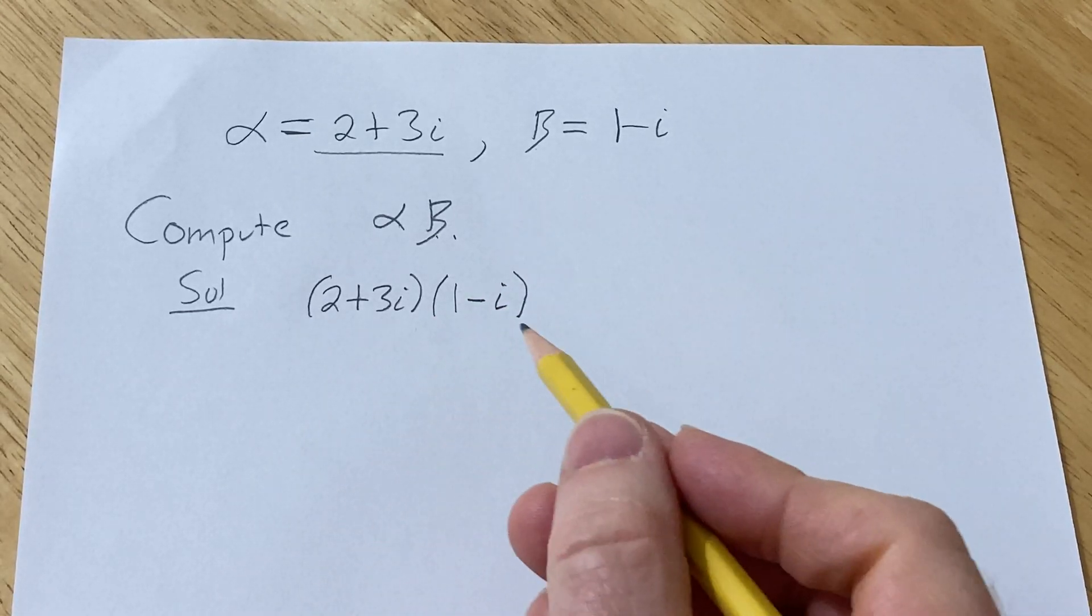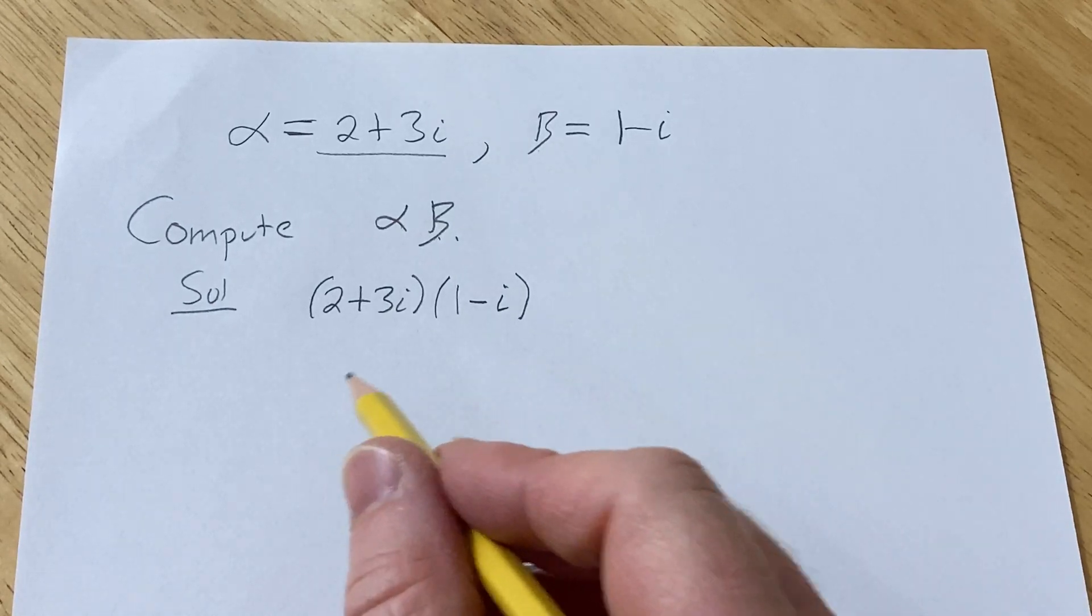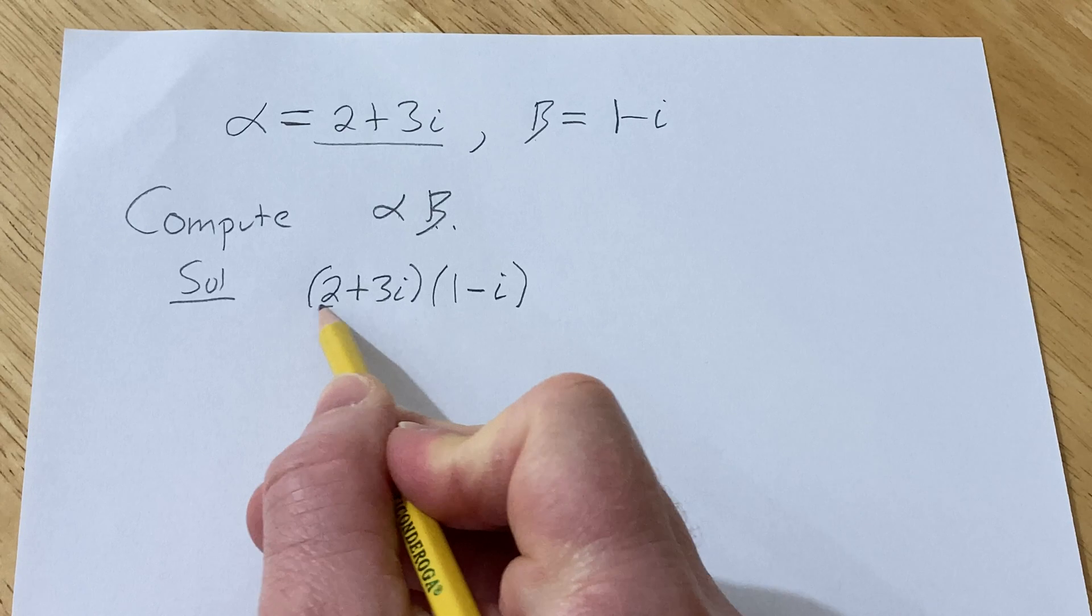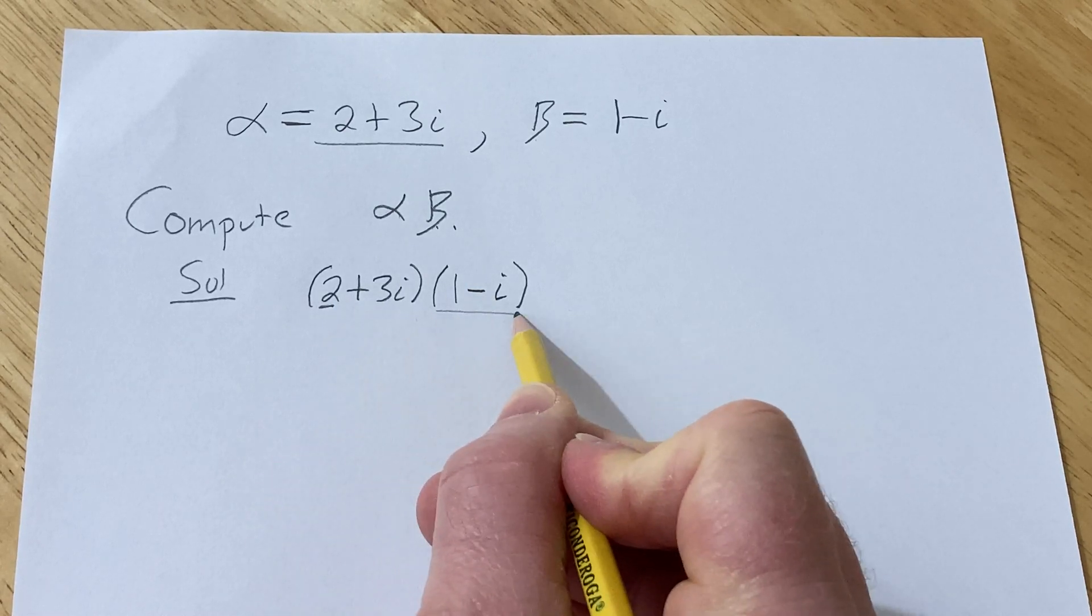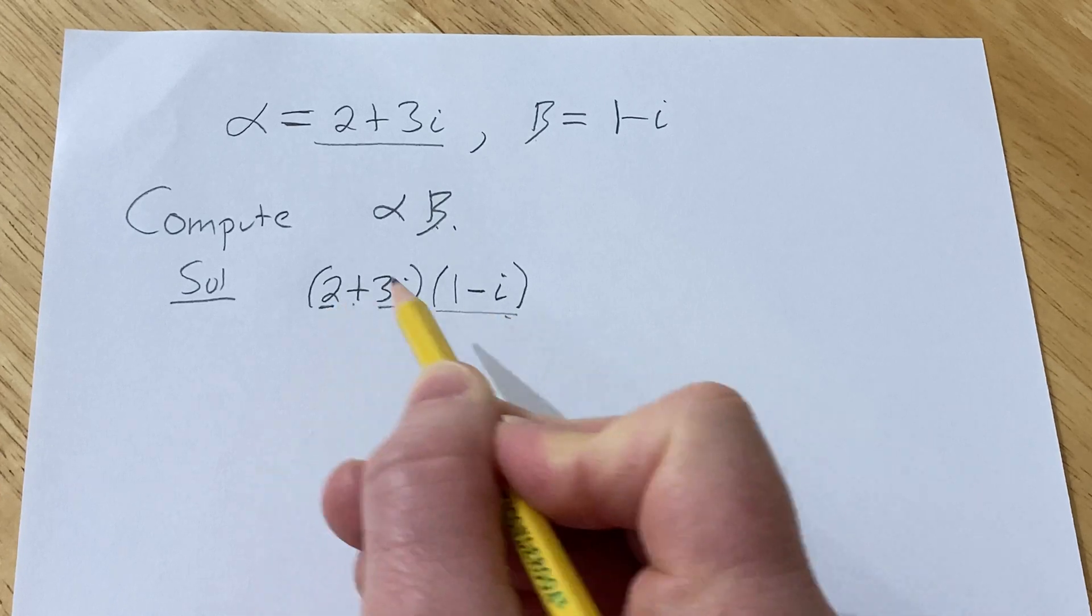Now there's a couple different ways to distribute and multiply. You can use FOIL, you can do it other ways. I'm going to do it like this. I'm basically going to take this number and multiply it by this, and then add and take this number and multiply it by this. So we're basically distributing.